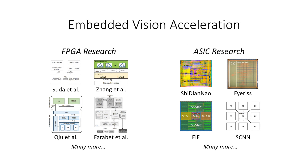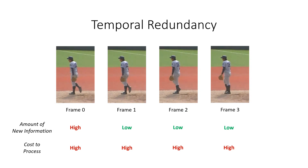There's been a significant amount of effort in the hardware community recently at accelerating computer vision. However, none of this work so far has exploited temporal redundancy. Temporal redundancy refers to the idea that there's only a small amount of change in between the average natural video frame. However, modern systems use the exact same amount of computation completely independently of this.